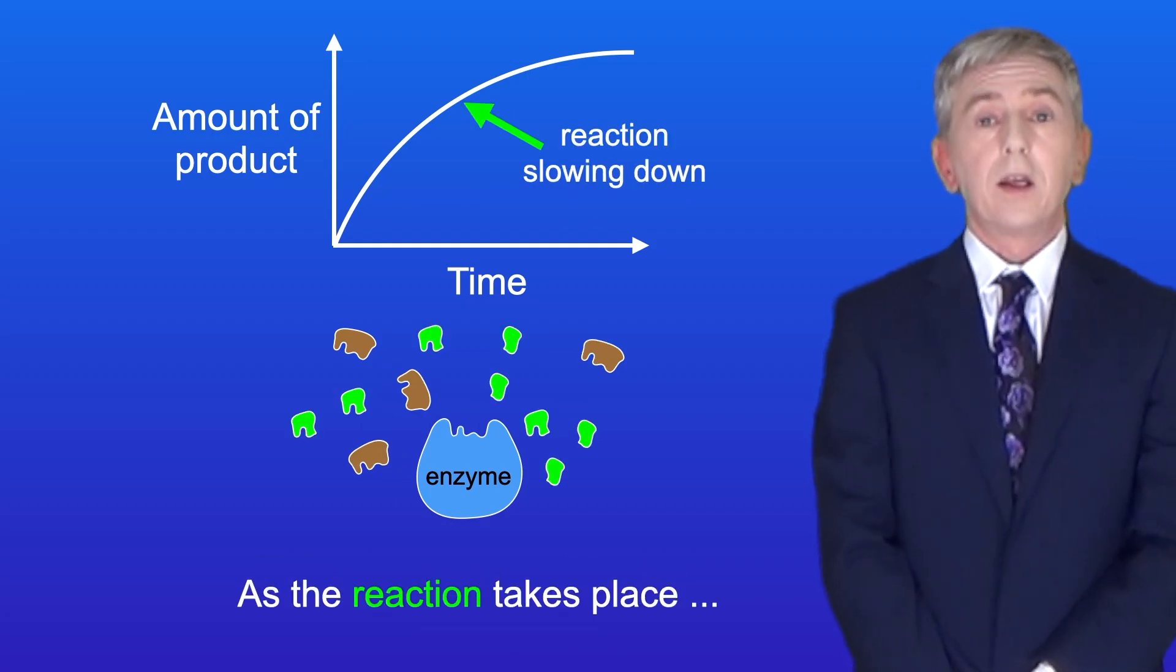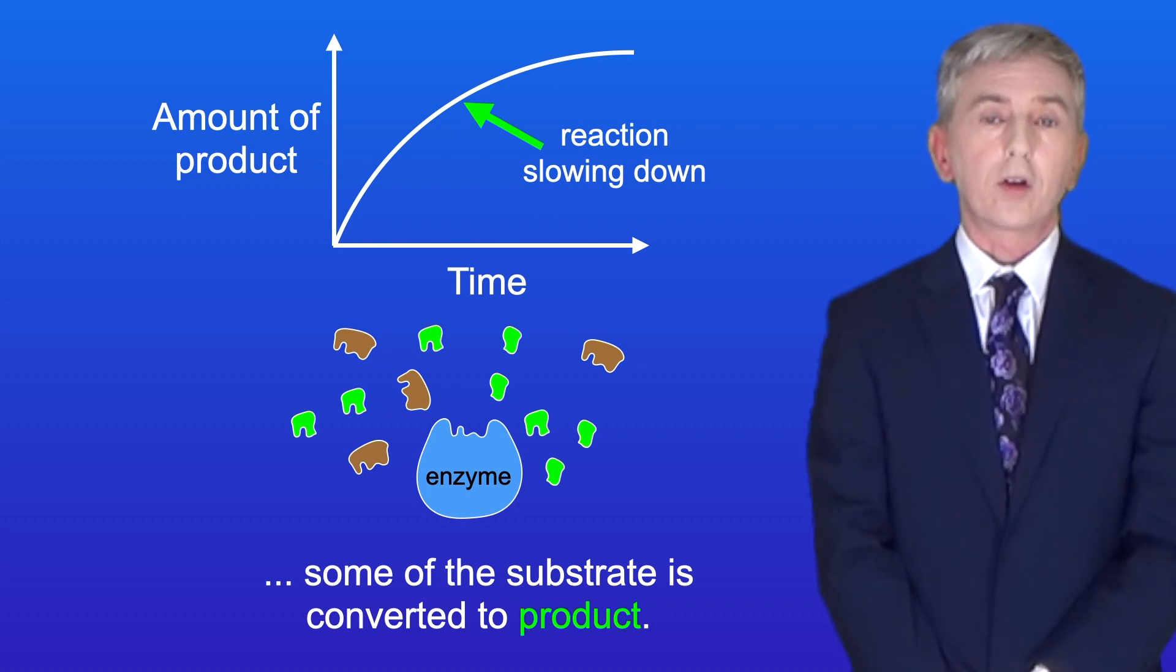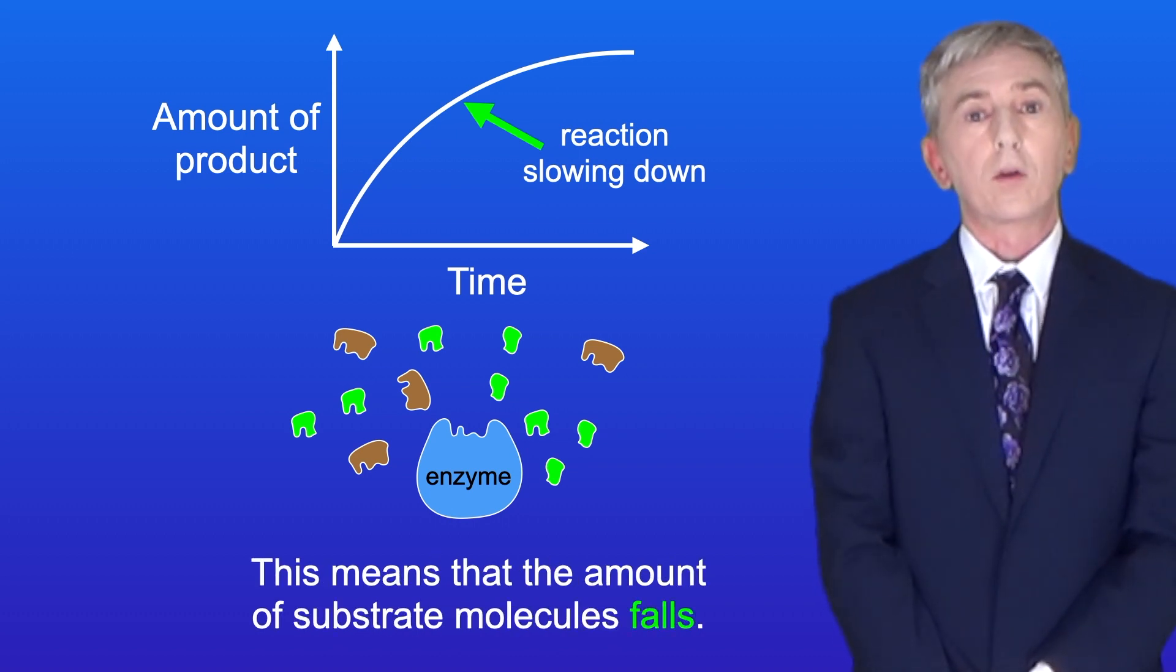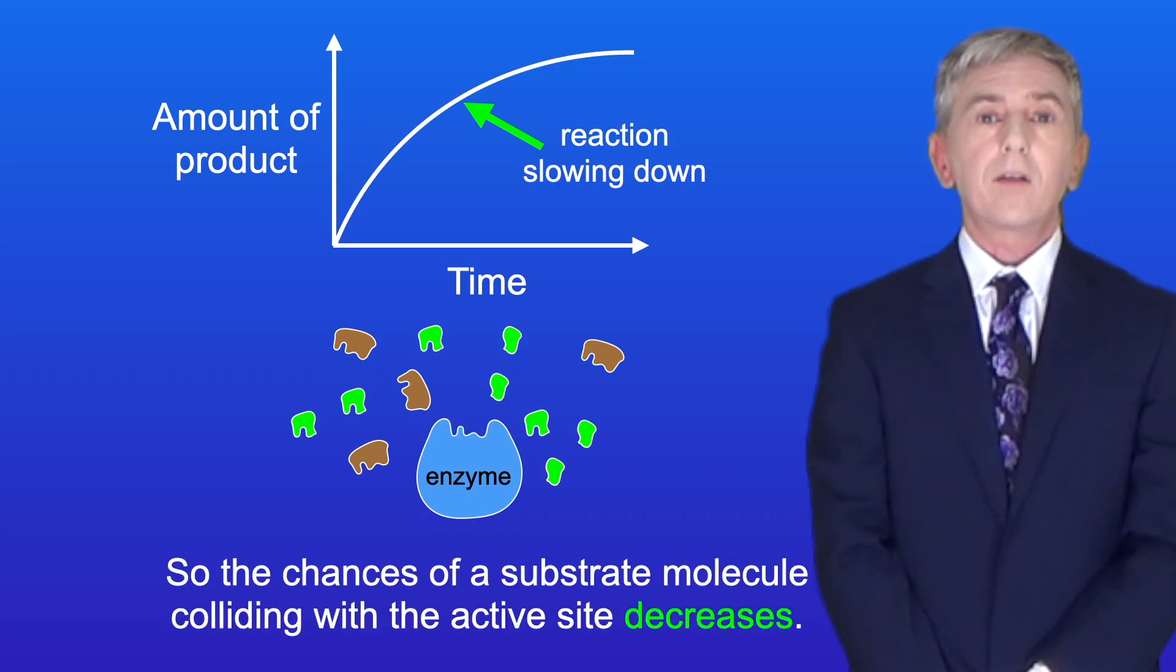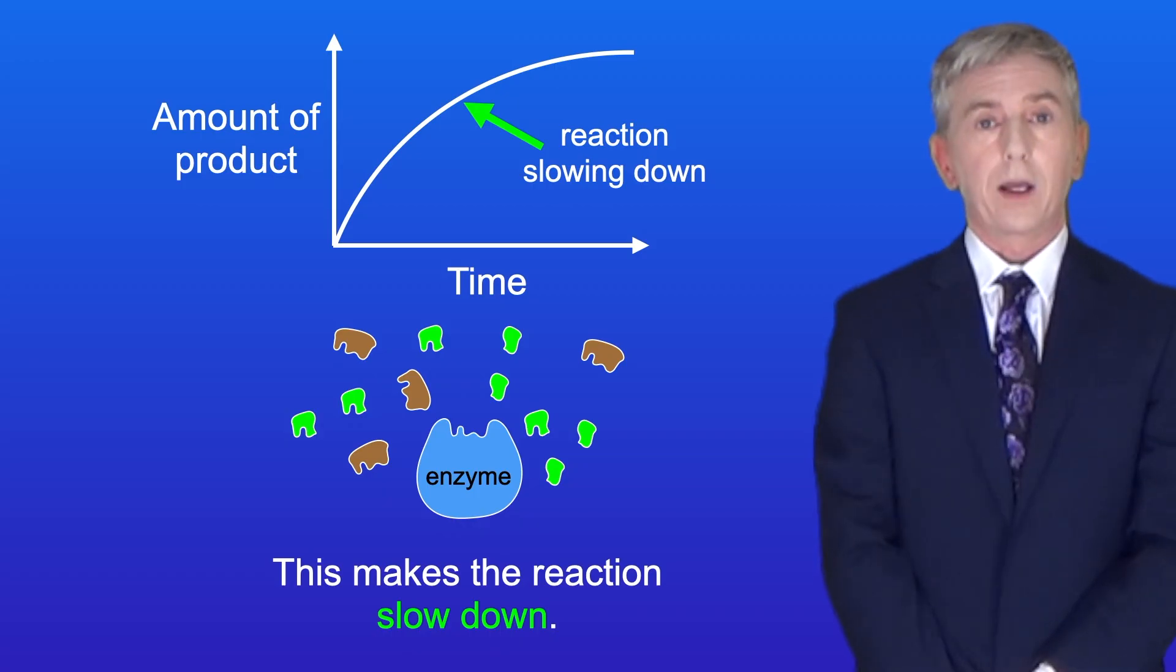As a reaction takes place some of the substrate is converted to product. This means that the amount of substrate molecules falls. So the chances of a substrate molecule colliding with the active site decreases and this makes the reaction slow down.